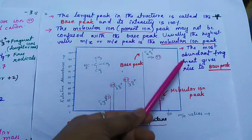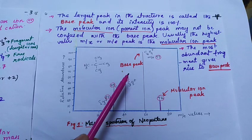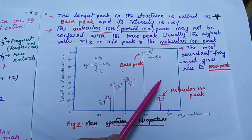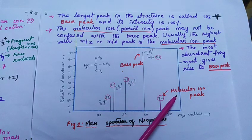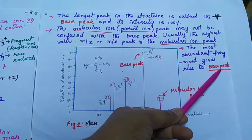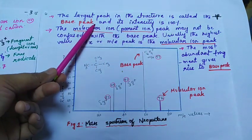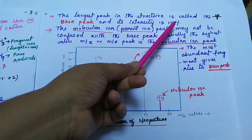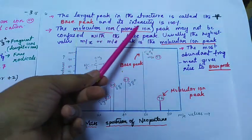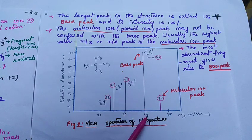Finally, after this discussion on the mass spectrum, you should be in a position to identify what is a base peak and what is the molecular ion peak. The base peak is the most abundant fragment that gives rise to the largest peak in the structure with 100% intensity. The molecular ion peak usually has the highest m/e value.